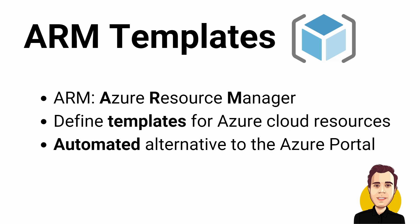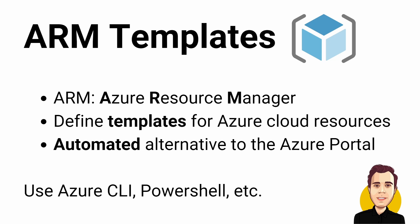We can define the template a single time and execute it as many times as we need it — it will always create the resources with the same configuration. We can use different ways to create and execute those ARM templates: PowerShell, the Azure CLI, and run the template inside of the Azure portal. In this video, we will use Visual Studio Code to create the ARM templates and execute them using the Azure CLI.